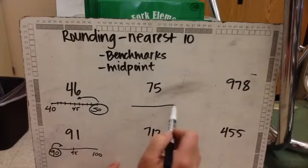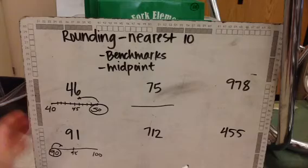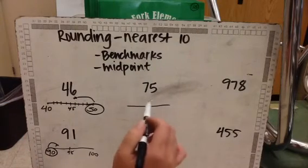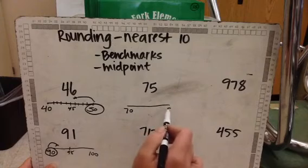All right, let me do a couple more two-digit examples and then I'm going to show you three digits. You do the exact same thing when numbers are three digits. So here's 75. Well, I need my benchmarks. It's in the 70s and the next benchmark is 80. My midpoint is 75.